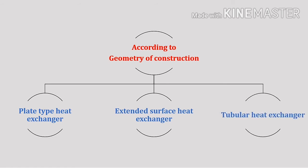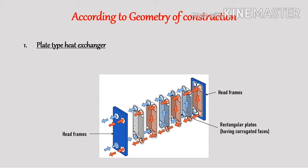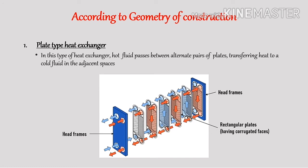According to the geometry of construction, the first type is the plate type heat exchanger. A plate type heat exchanger consists of a series of rectangular parallel plates held firmly together between head frames. The plates have corrugated faces, which provide a high degree of turbulence even at low flow rates. It is provided with inlet and outlet nozzles for fluids at the end. Hot fluid passes between alternate pairs of plates, transferring heat to the cold fluid in the adjacent space. Plate type heat exchanger is very compact, requires a very small flow space, can be easily dismantled and cleaned, and provides a large heat transfer area in a small volume.